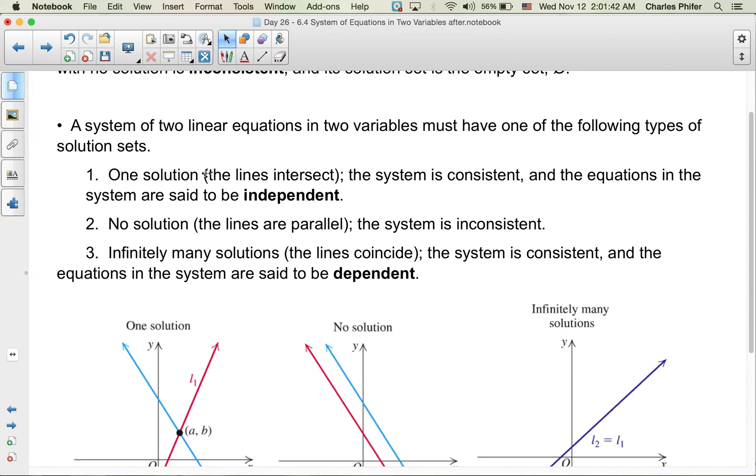One solution means the lines cross; the system is consistent and the equations are independent. No solutions means the lines are parallel and the system is inconsistent. Infinitely many solutions mean the lines coincide, and the equations in the system are said to be dependent.